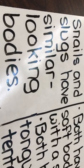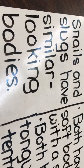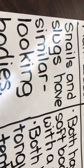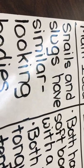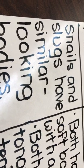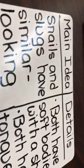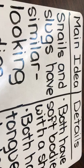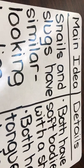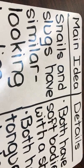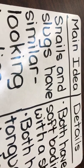So we're going to take a look at the section snail and slug bodies from the book. The main idea is the most important idea in this section. In this book, each section tells us a way that snails and slugs are similar to each other.